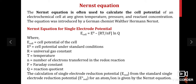Where E_cell is the cell potential, E° is the cell potential under standard conditions — that is, room temperature, one atmospheric pressure, and one molar concentration. R is the universal gas constant, 8.314; T is the temperature; n is the number of electrons involved in the redox reaction; F is Faraday's constant; and Q is the reaction quotient, that is the concentration of products divided by reactants.